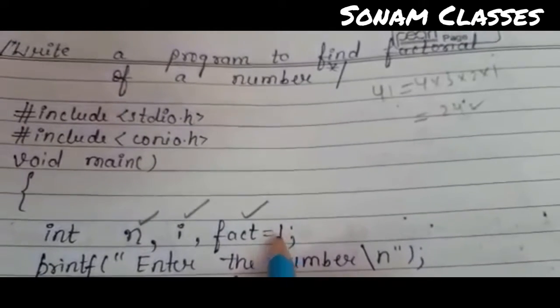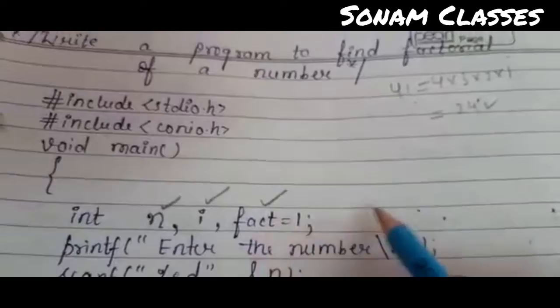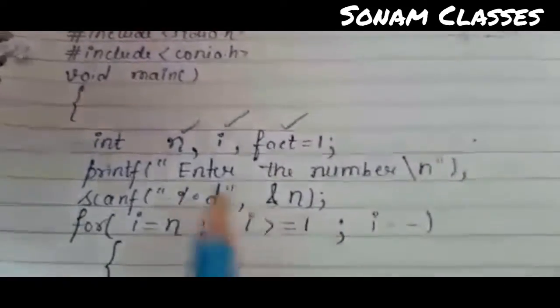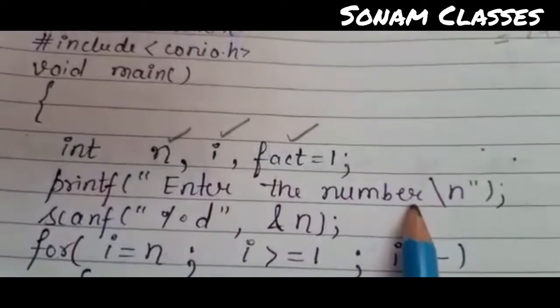Now we will initialize 1. We will initialize 1. You will know that the reason - because at the beginning of this time there is no value of factorial. So what do we take? Printf, enter the number. The number of factorial is the number.